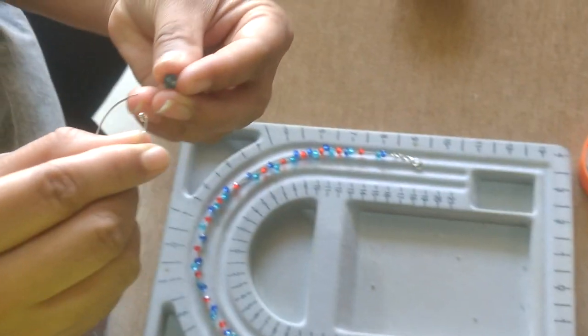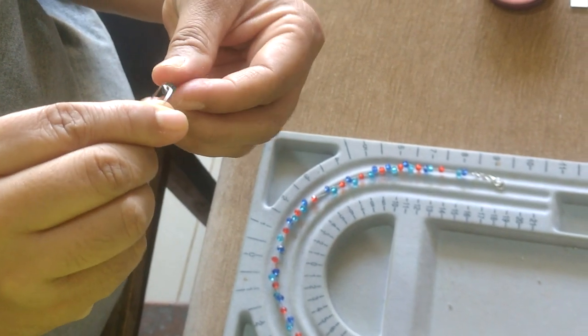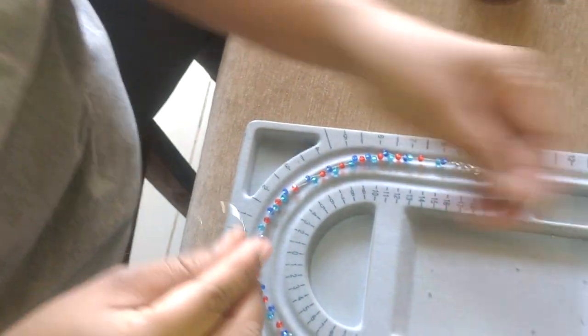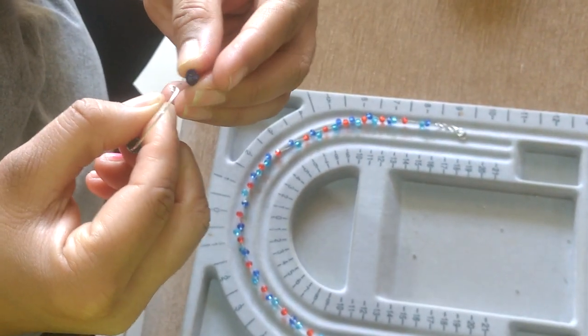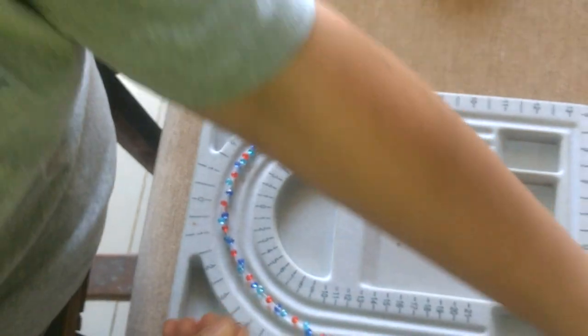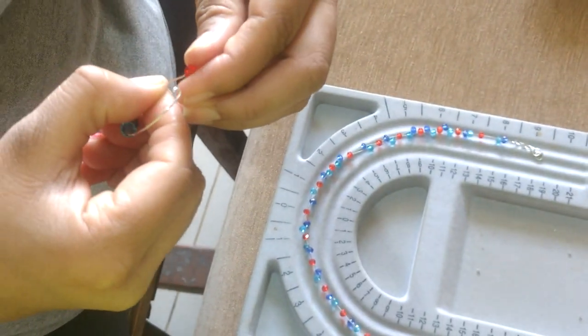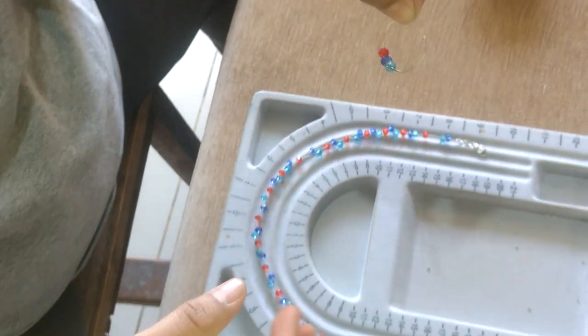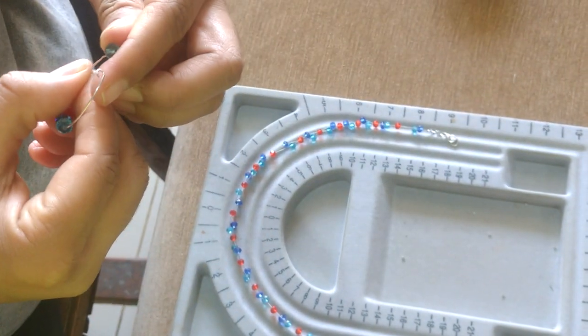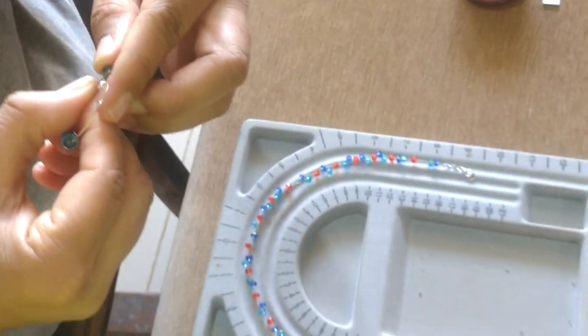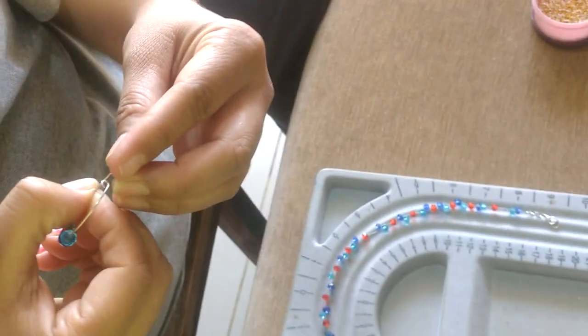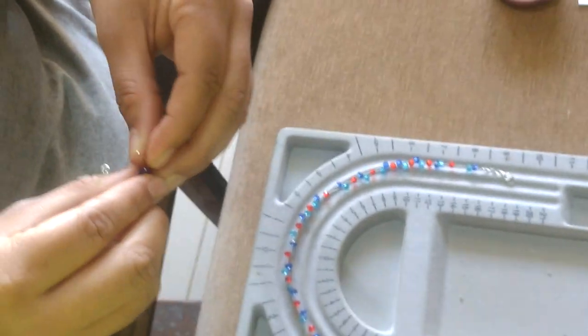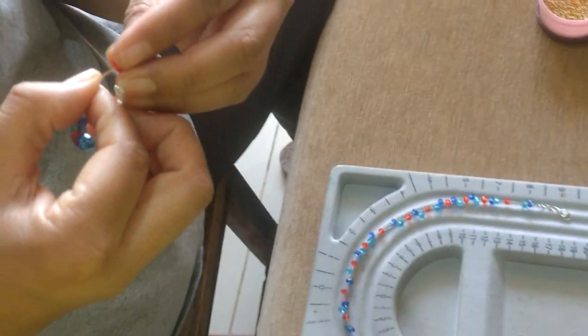Once this is done we'll again follow the same procedure because we are making a matching set. Light blue, then goes the dark blue, then goes the red. If you feel this is very less you can go another round of light blue, dark blue, and the beautiful red beads.